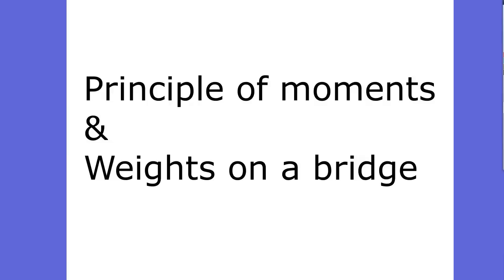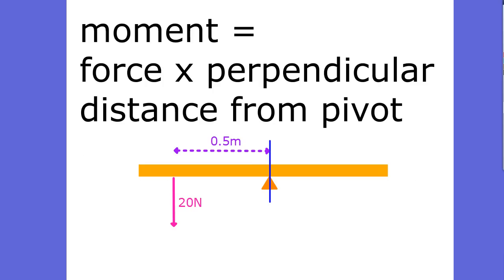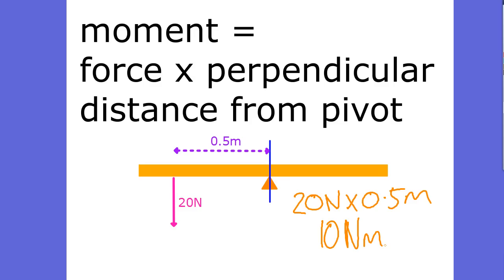We're going to look at the principle of moments in this video and also weights on bridges because it's all linked. The moment is force times perpendicular distance from the pivot. In our example, the force is 20 newtons and the perpendicular distance from the pivot is 0.5 metres, which gives us a moment of 10 newton metres. The perpendicular bit is important when a force is at a funny angle, but here our force is at 90 degrees to our distance — nice and simple.